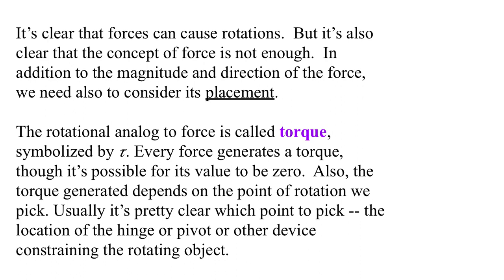The rotational analog to force is called torque, and it's symbolized by the Greek letter tau. Tau is sort of like a pi that has only one leg. Each force generates a torque, although it's possible for the value of that torque to be zero. Even when the force is not zero, the torque might be zero. Also, the torque generated depends on the point of rotation that we pick. Usually, it's pretty clear which point to pick. The location of the hinge or pivot or other device constraining that rotating object.